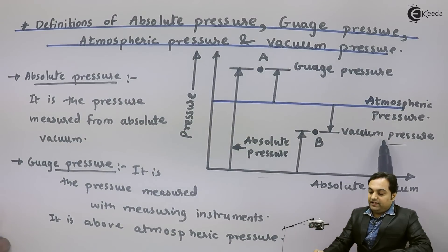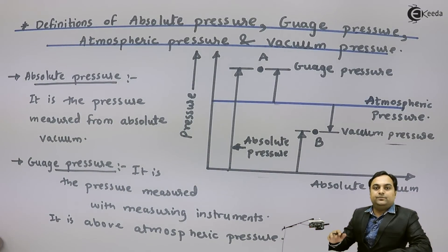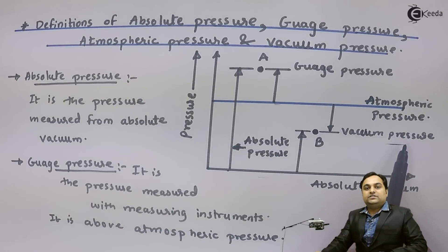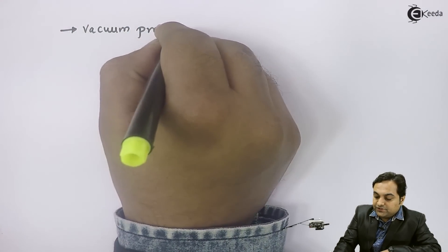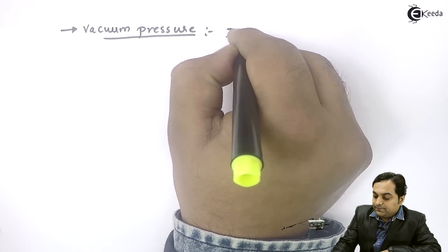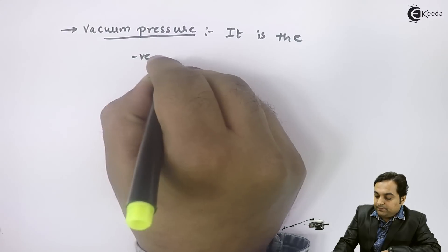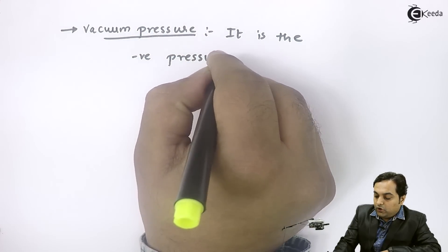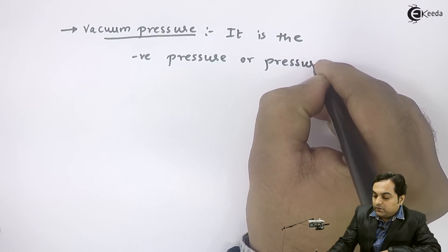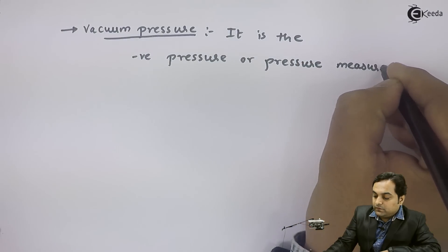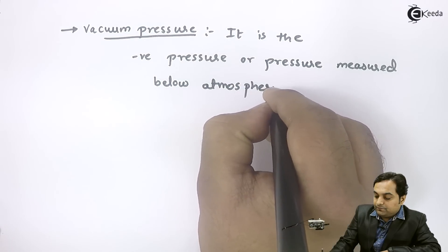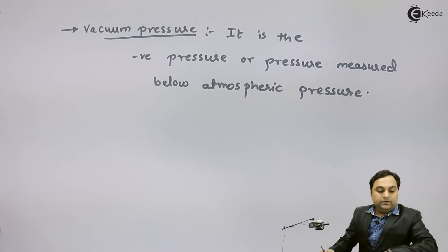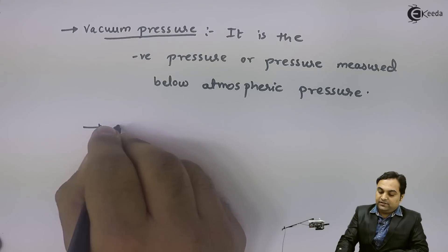Next we have vacuum pressure. Vacuum pressure is the pressure that goes below the atmospheric pressure blue line. It is less than atmospheric pressure. Vacuum pressure is the negative pressure, or pressure measured below atmospheric pressure.